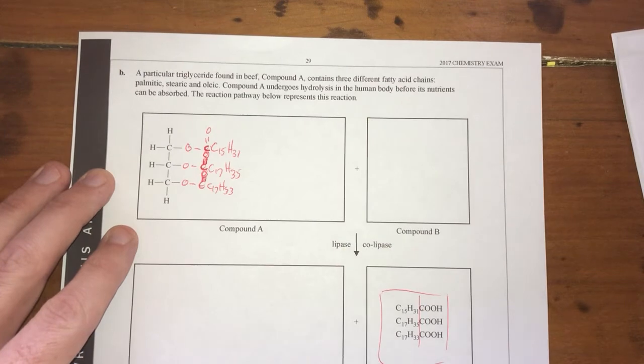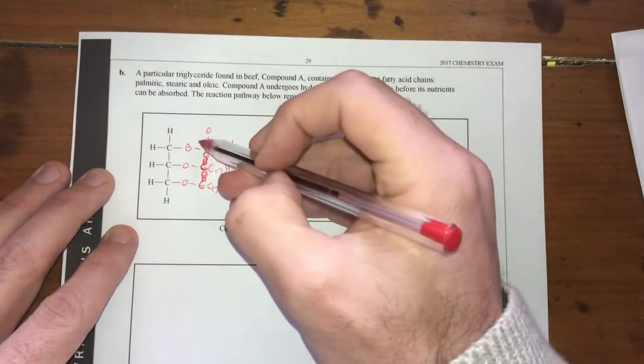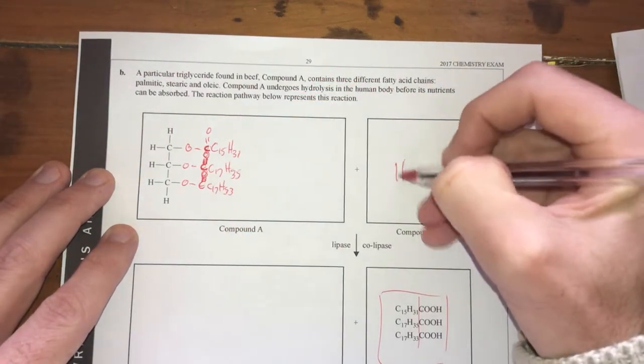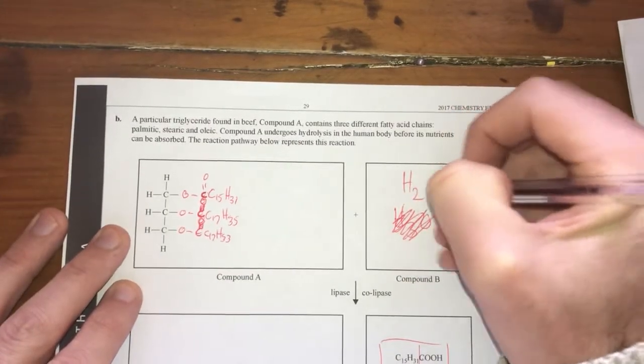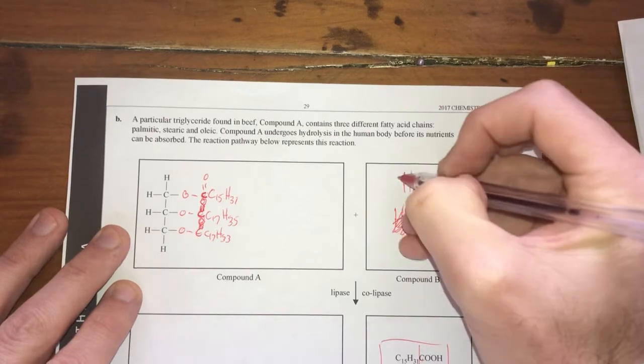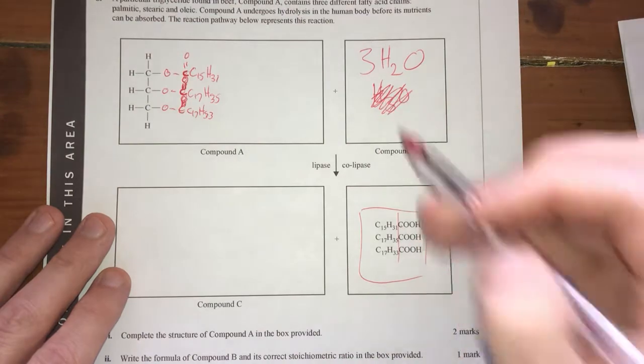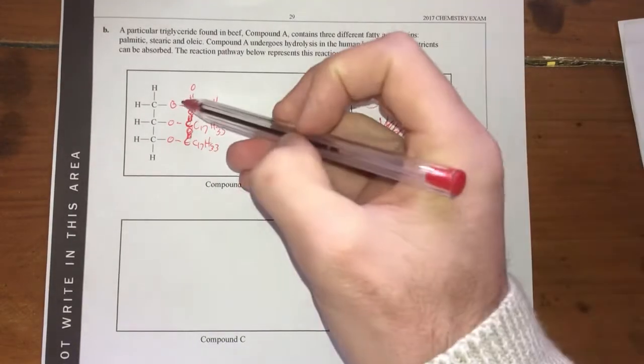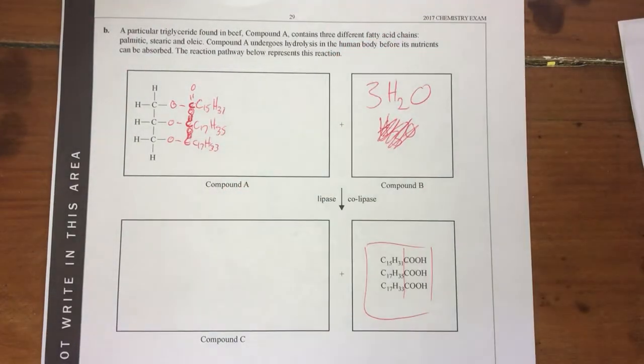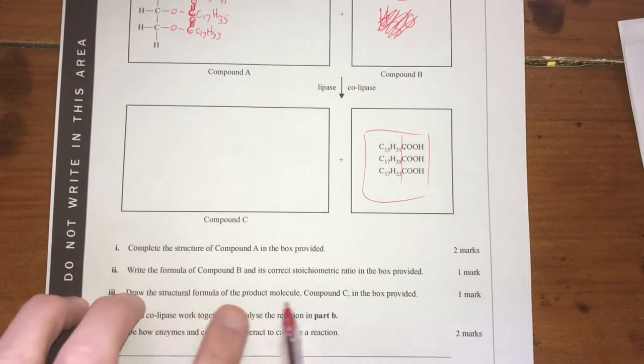Right, the formula for compound B and its correct stoichiometric ratio here. What we're going to know is this is a hydrolysis reaction. We're going to be breaking up these ester bonds. So therefore, it's going to be hydrolyzed by, not H3O plus, not hydronium. It's going to be hydrolyzed by water. And we're going to have three waters as well. Because it asks for the correct stoichiometric ratio in that box there. So therefore, that's our compound B because we're doing hydrolysis of these.